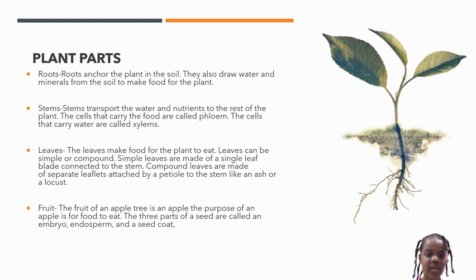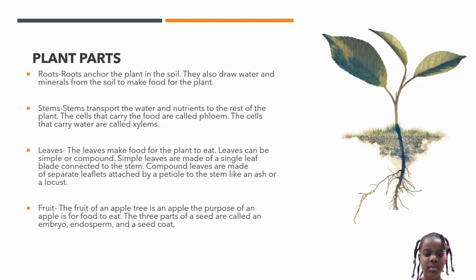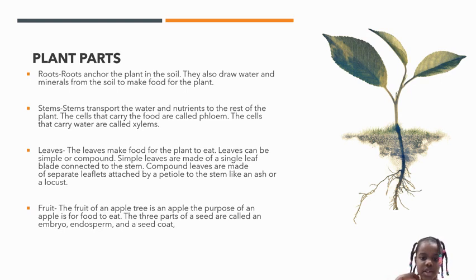Leaves make food for the plant to eat. Leaves can be simple or compound. Simple leaves are made of a single leaf blade connected to the stem. Compound leaves are made of separate leaflets attached by the petiole to the stem, like an ash or a locust.